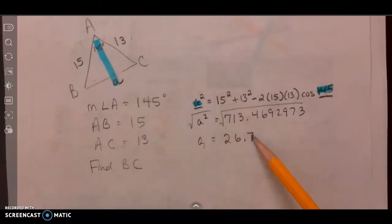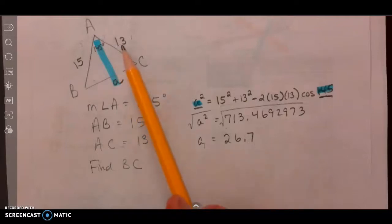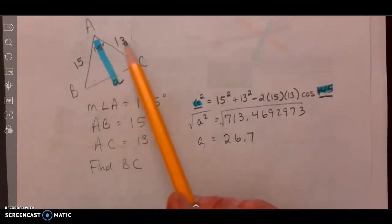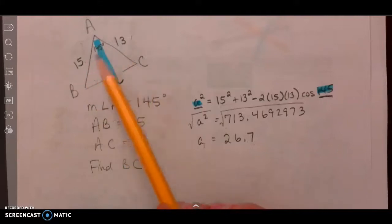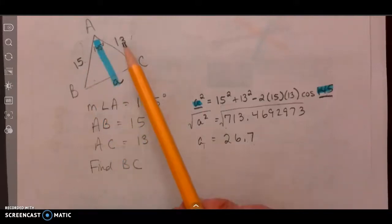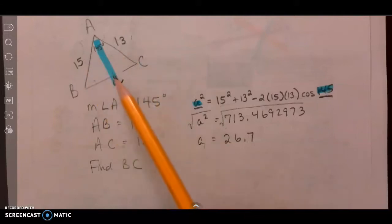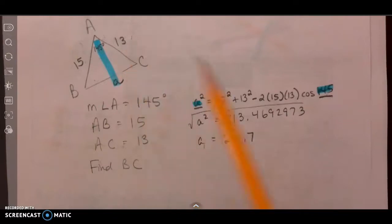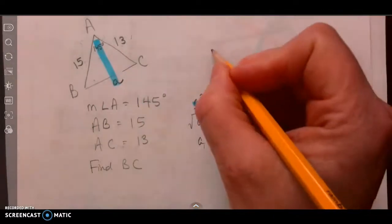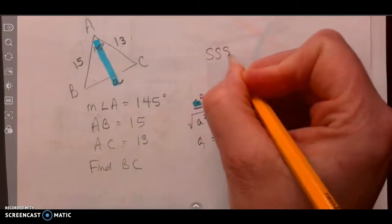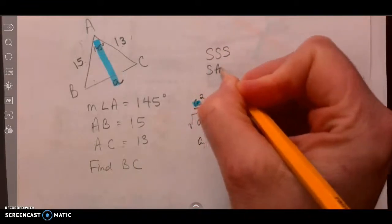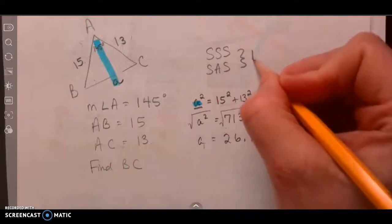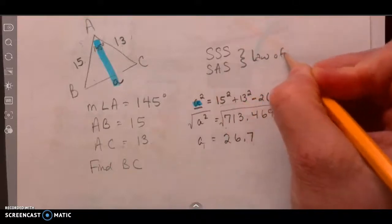You might be wondering: how do I know when to use Law of Sines versus Law of Cosines? When you have side-angle-side, that is usually a time where you're going to use Law of Cosines. If you have all three sides and no angle, you're also going to use Law of Cosines. So if you have side-side-side or side-angle-side, you would use Law of Cosines.